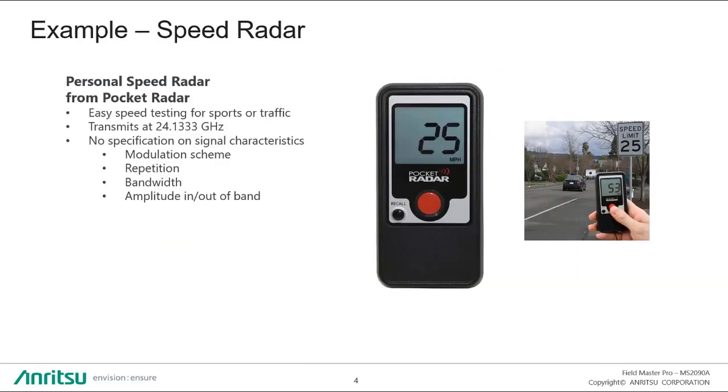To illustrate this, I'm going to use this little pocket radar device that can be purchased off Amazon. It's basically just a little speed radar, easy for testing speeds like a baseball pitch or looking at traffic. It transmits a signal at 24.1333 GHz.